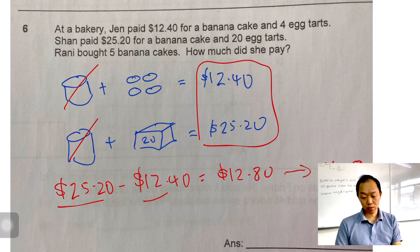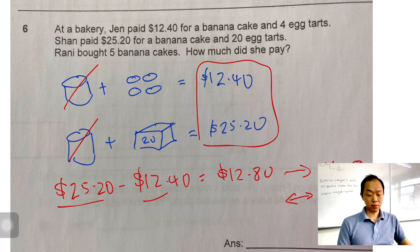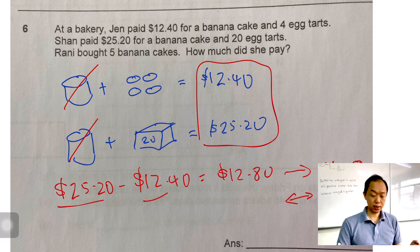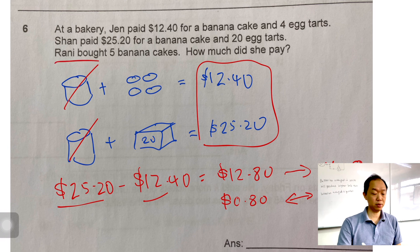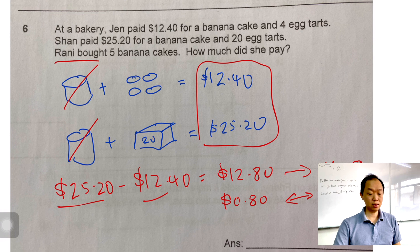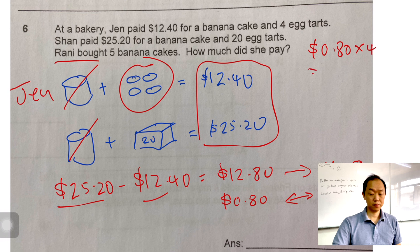So now if 16 of them cost $12.80, I'm going to find 1. How much does 1 egg tart cost? We just take $12.80 divided by 16, that is $0.80, which is a decent amount of money. That's not what we want to do because eventually we want to find the cost of five banana cakes. So if 1 egg tart is $0.80, over here, this is Jan. So Jan bought four. So let's take $0.80 times 4, that's $3.20. I want to find the cost of one banana cake. I got to take $12.40, take away $3.20.